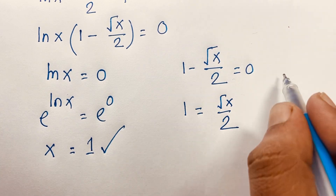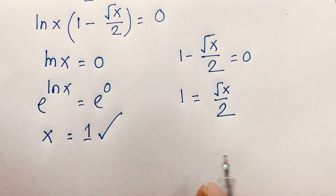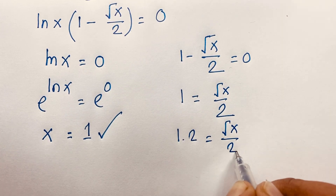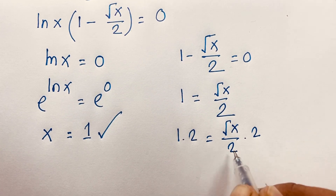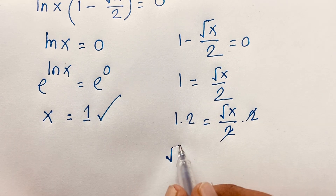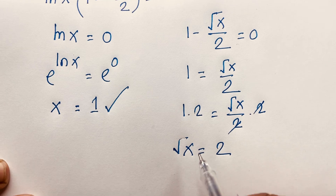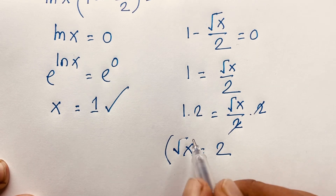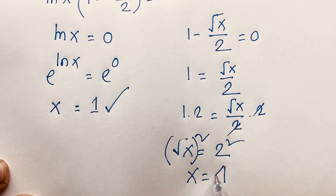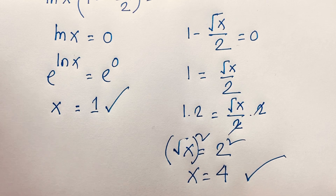For the second case, 1 minus square root x over 2 equals 0. Moving the term to the other side gives square root x over 2 equals 1. Multiplying both sides by 2, the 2 cancels and square root x equals 2. Then squaring both sides, x is equal to 4.